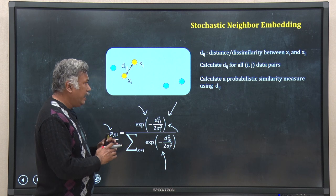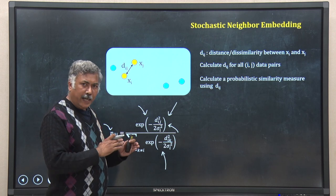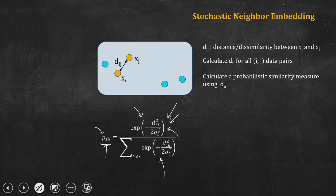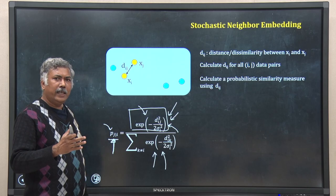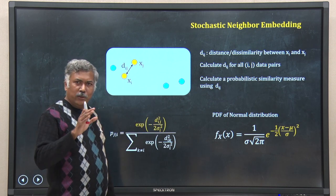This gives us p_j given i, the conditional probability of j given i. Although this looks complicated, this function is nothing but a normal distribution. This is the PDF of the normal distribution — in a Gaussian distribution you have e to the power of minus half times (x minus mu) squared divided by sigma squared. Here, in place of (x minus mu) you have d_ij, and you have sigma_i.